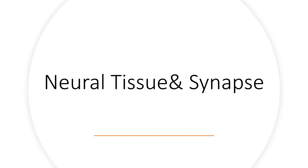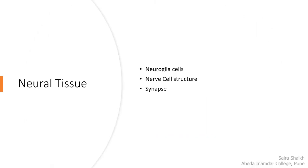Hello everyone. Welcome to the second part of chapter Control and Coordination. The topic of my presentation today is neural tissue and synapse. The main points I will be talking about are neuroglia cells, nerve cell structure, and synapse.